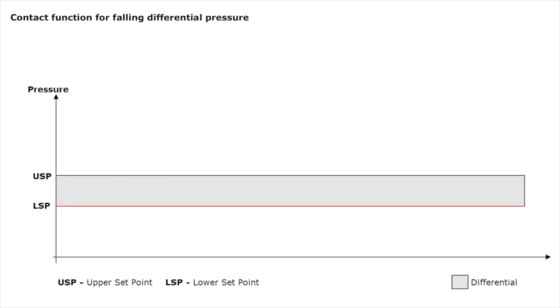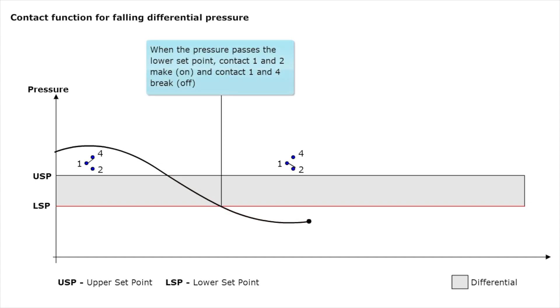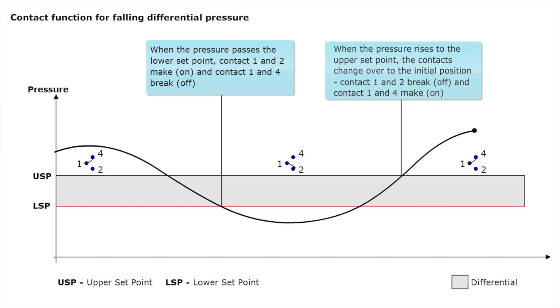Let's look at the cutoff for falling pressure. When the pressure passes the lower setpoint, contacts 1 and 2 make and contacts 1 and 4 break. When the pressure rises to the upper setpoint, the contacts change over to the initial position. Contacts 1 and 2 break and contacts 1 and 4 connect.